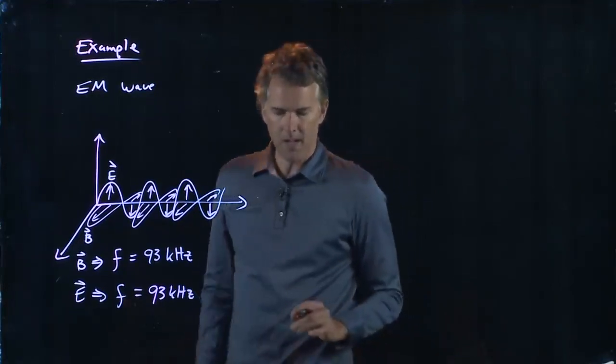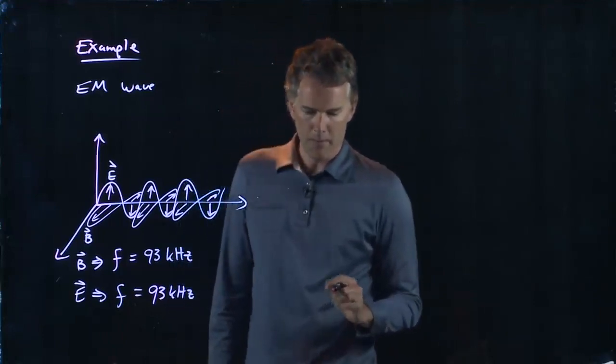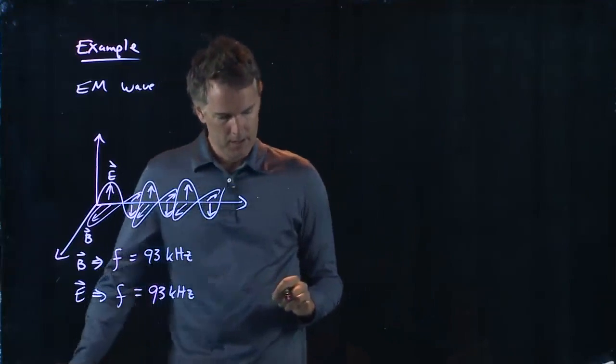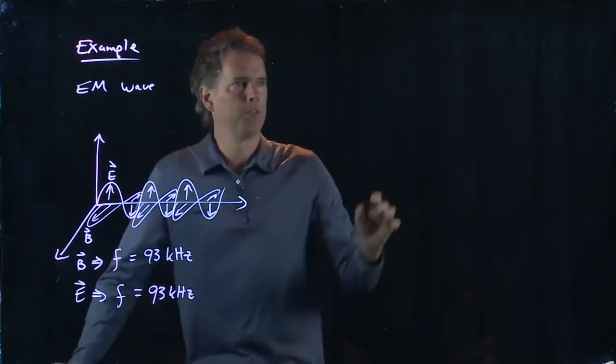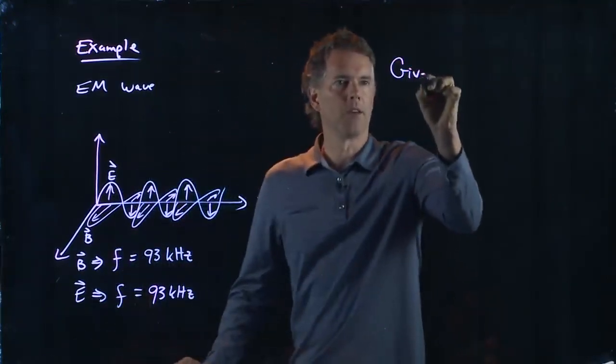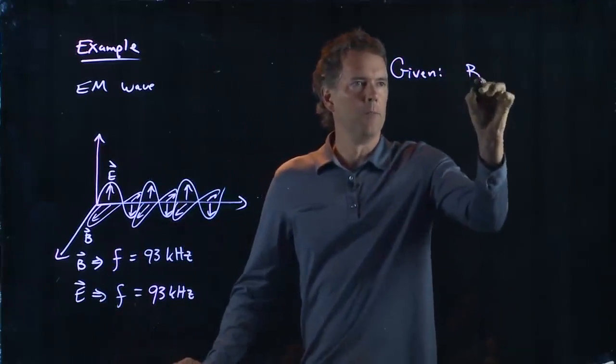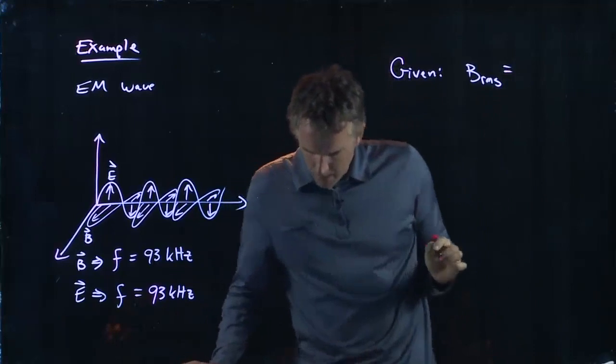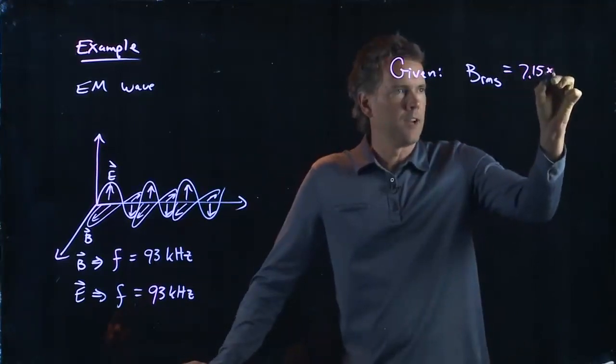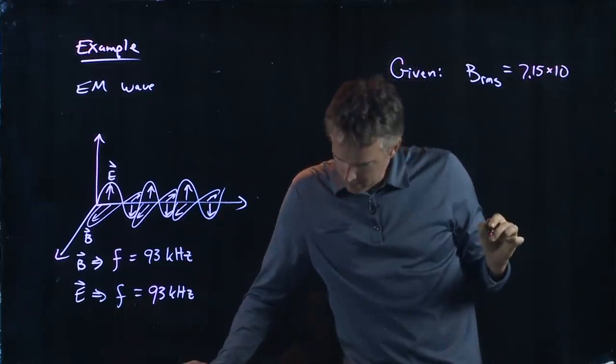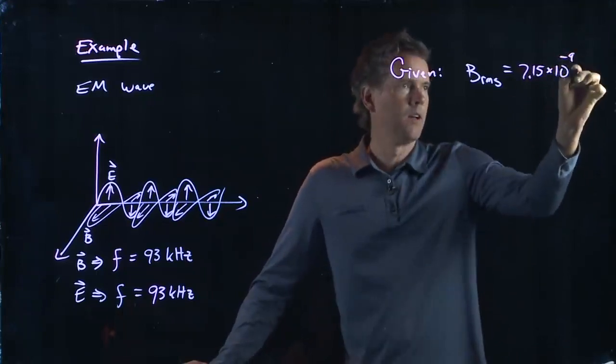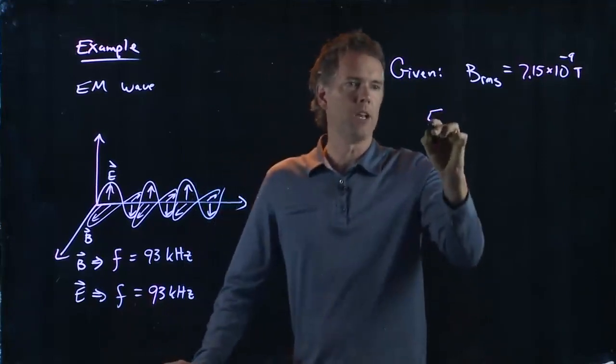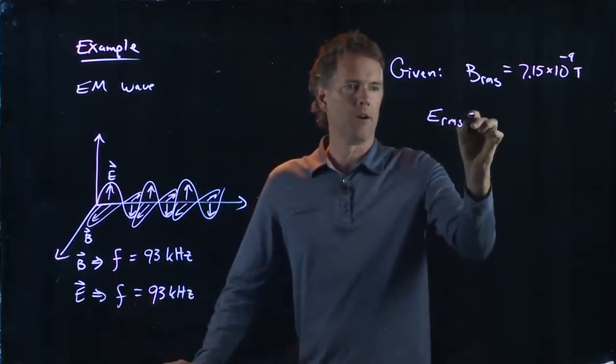All right. Part B says what is the RMS strength of the electric field. And what they gave us was the strength of the B field, RMS, and they told us it was 7.15 times 10 to the minus 9 Tesla. And so now we're looking for E RMS.